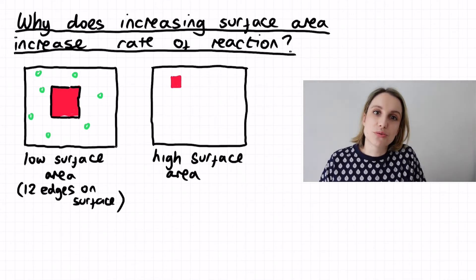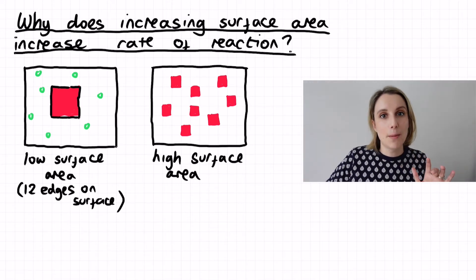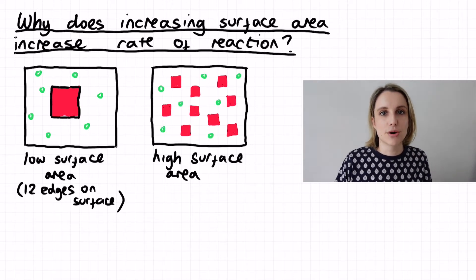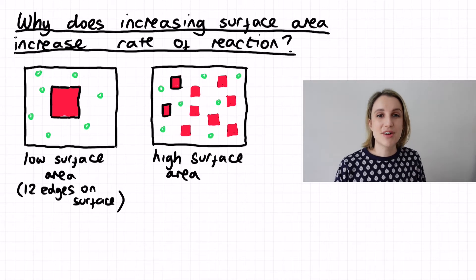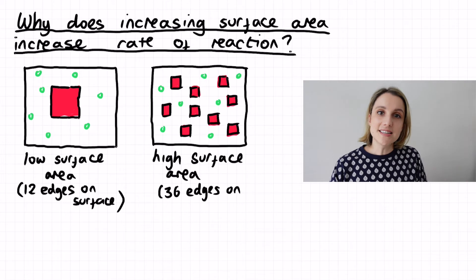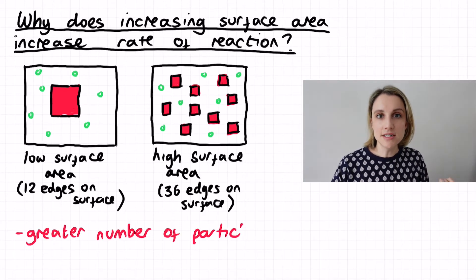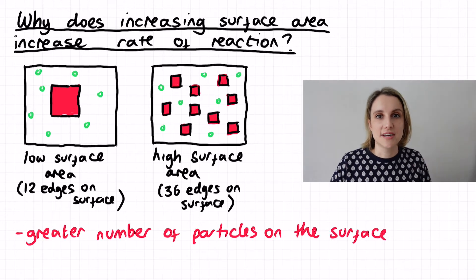If I then draw a higher surface area example, you can see I've still taken the same number of blocks. There's the same area of red, but this time there are 36 edges exposed. So things like powders and smaller pieces have a higher surface area because you've got more of the edges exposed.